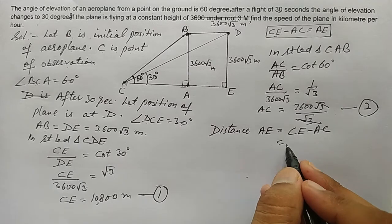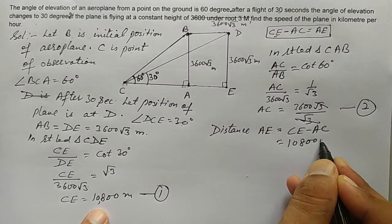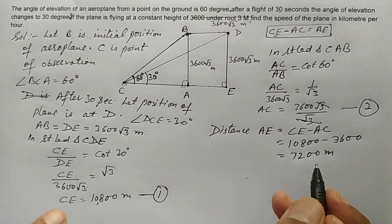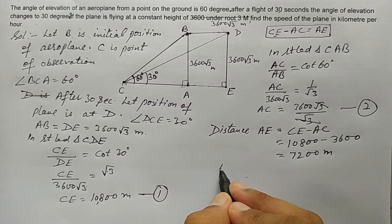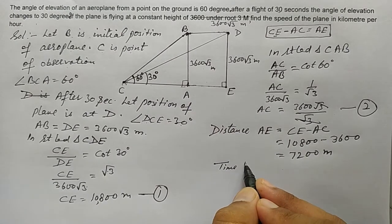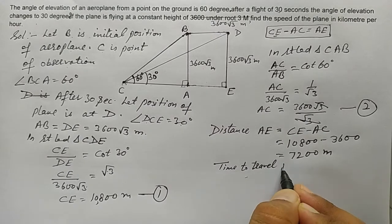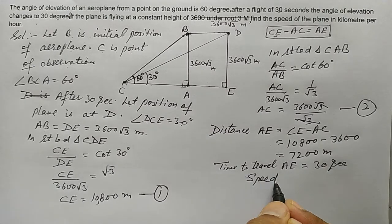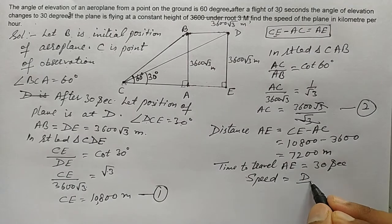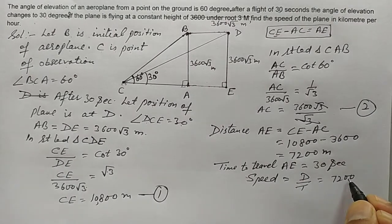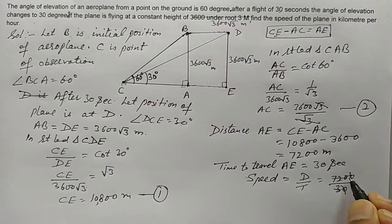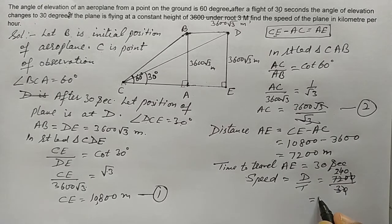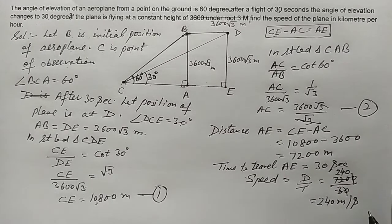Now, distance AE = CE minus AC = 10800 minus 3600 = 7200 meters. Time taken to travel AE is 30 seconds. Therefore speed = distance over time = 7200 over 30 = 240 meters per second.